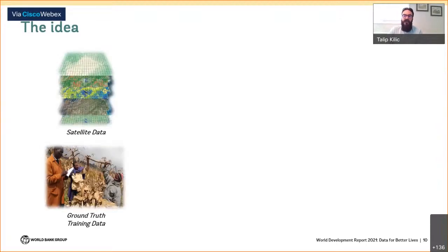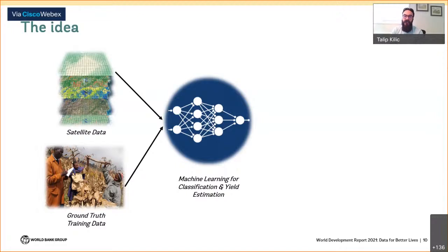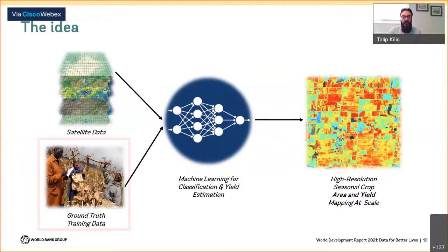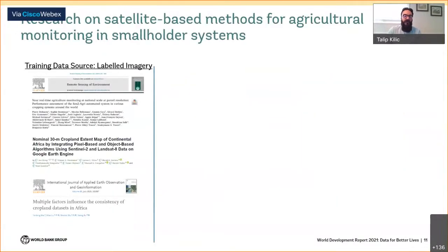Our vision is a system that combines satellite data with geo-referenced ground truth training data from farmers' fields. These ground data train machine learning models that can identify plots, classify crops, and estimate crop area and yields for entire landscapes beyond locations where ground data are collected. These estimates would be at higher frequency and greater resolution than surveys alone, while avoiding biases that would otherwise exist by relying exclusively on satellites. Today's talk is focused on the role that ground truth training data play in these integrated systems.